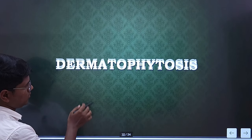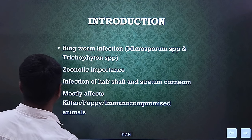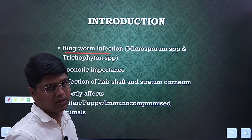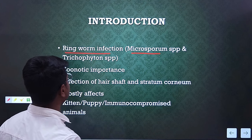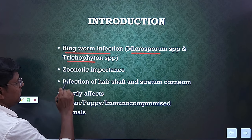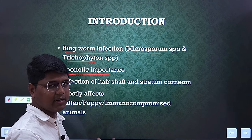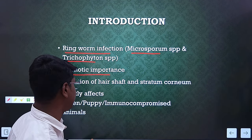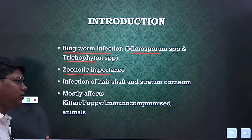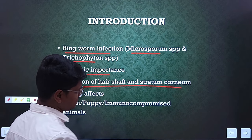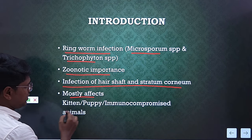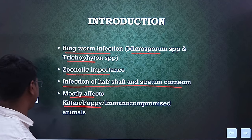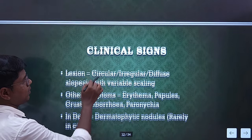Next: Dermatophytosis — this is the second disease of fungal dermatitis, also known as ringworm infection. The two species which are very common in ringworm infection are Microsporum species and Trichophyton species. This disease is of very zoonotic importance. While handling all fungal diseases, please try to wear gloves when taking impression smears or cellophane tape impression smears or any swabs. The infection of the hair shaft and stratum corneum basically causes this infection. It mostly affects young animals — kittens and puppies — and also immunocompromised animals.